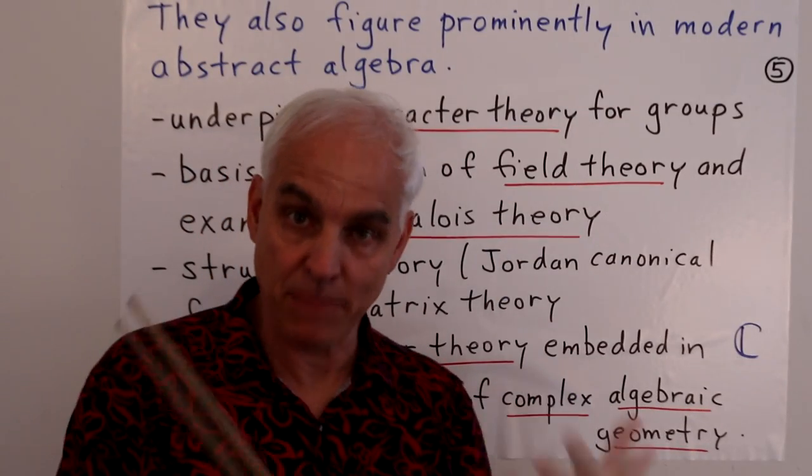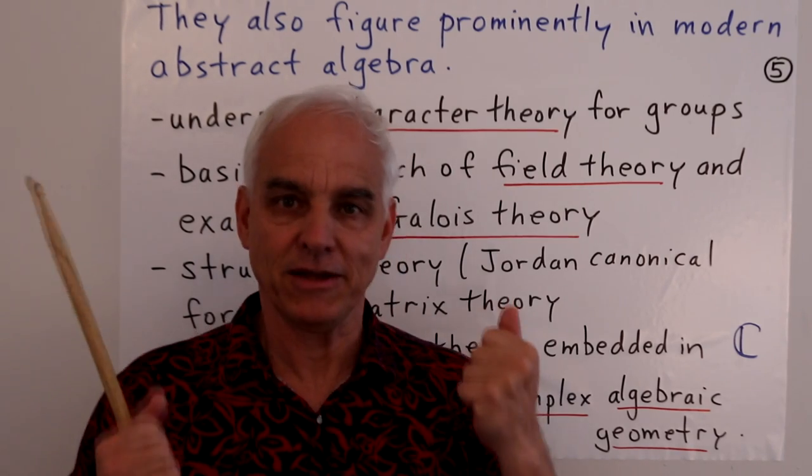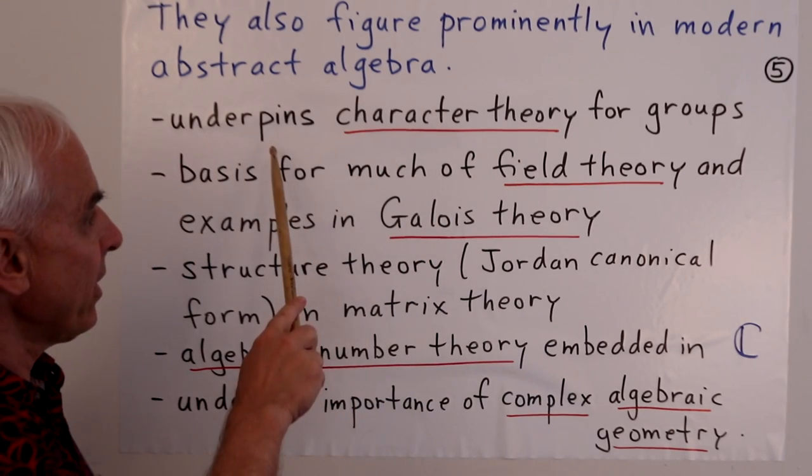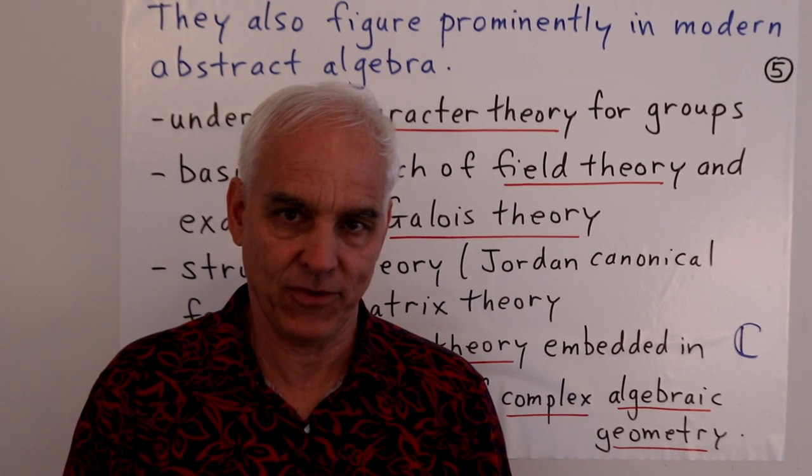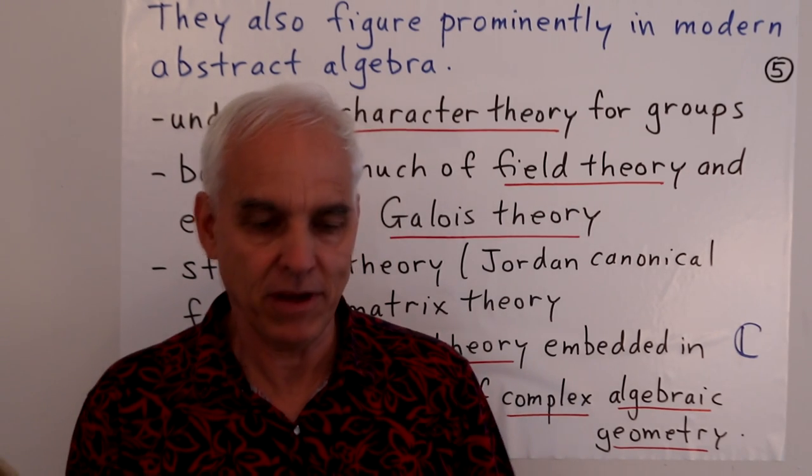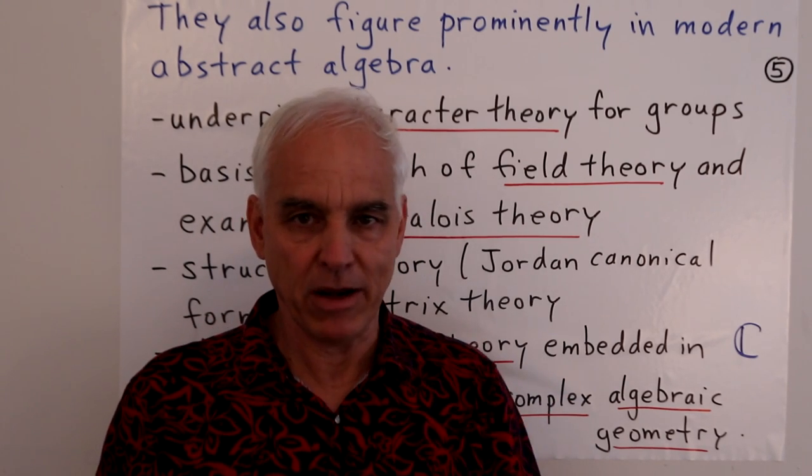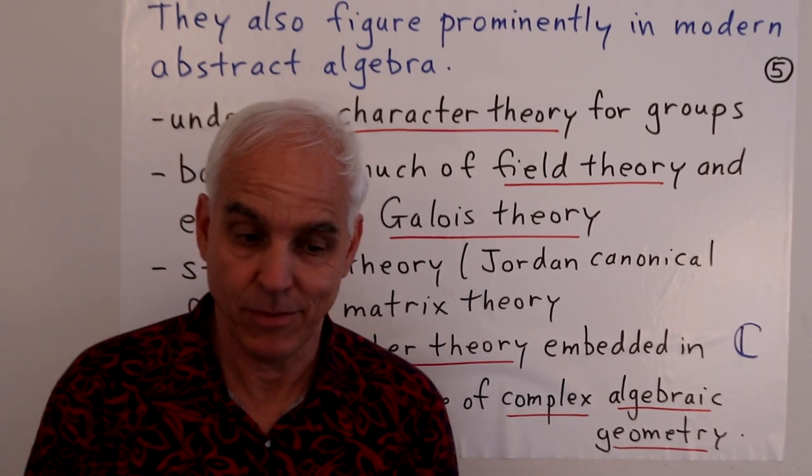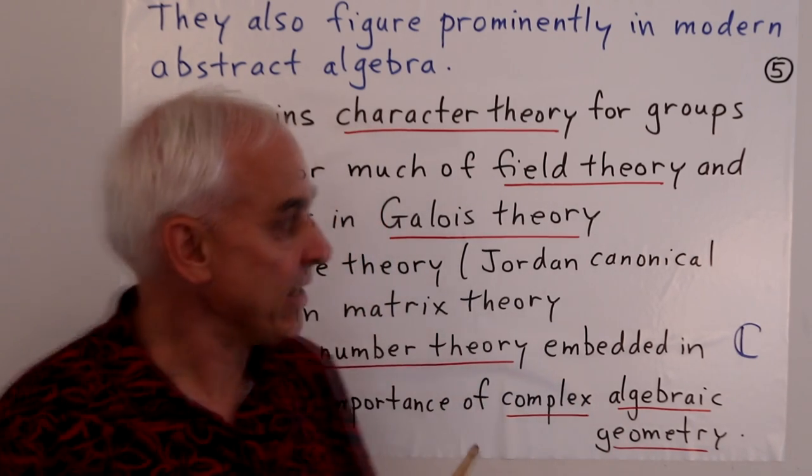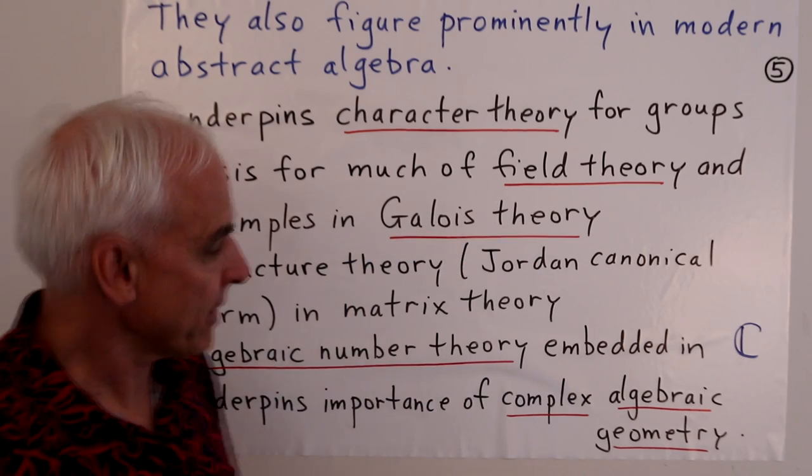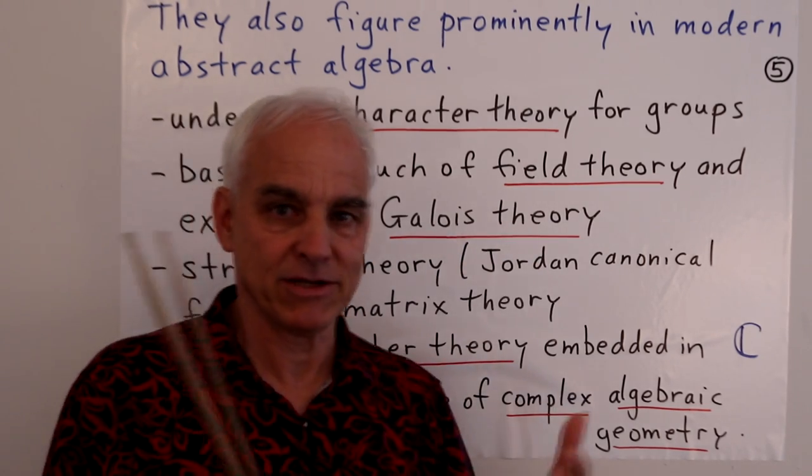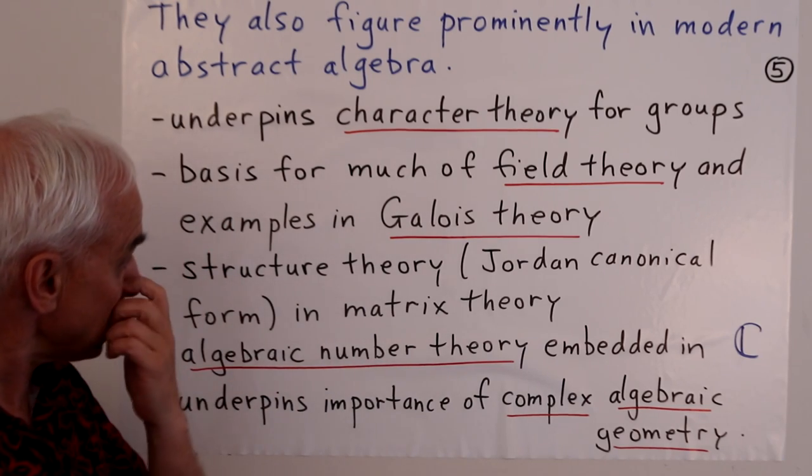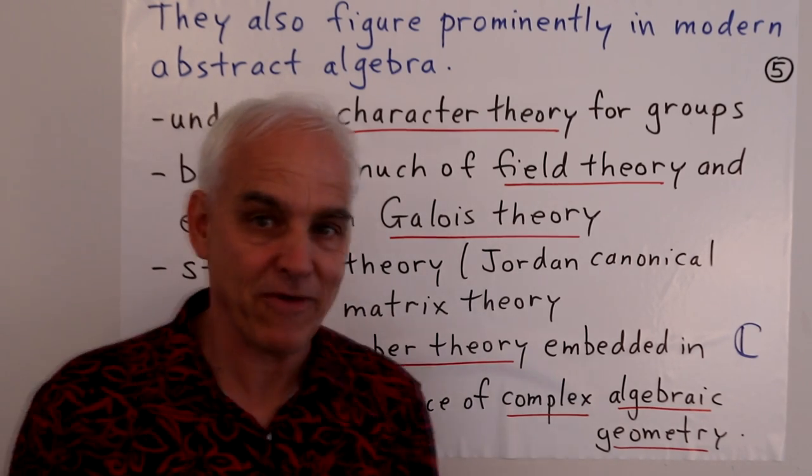Now for us, we're interested in setting up abstract algebra. And so we have to make the point that in abstract algebra, also these theorems play a very important role. For example, the fundamental theorem really underpins character theory for groups. So once I'm studying group theory, non-commutative finite group theory, there's a theory of characters, and the fundamental theorem is intimately connected with that theory. It's also the basis for much of field theory. When we set up fields and look at concrete examples of fields, and especially the associated area called Galois theory, the fundamental theorem and its role are sort of intermittently woven into this theory. It's very important for structure theory of matrices.